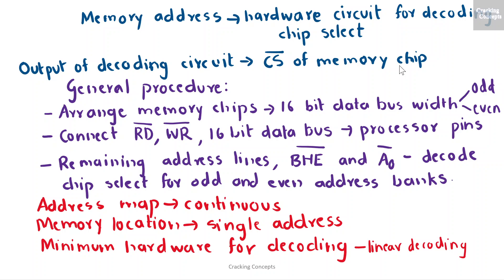Now let us see the general procedure for static memory interfacing with 8086. First, we arrange all the available memory chips to obtain a 16-bit data bus width. The upper 8-bit bank is called the odd address memory bank and the lower 8-bit bank is called the even address memory bank. Then we connect the available memory address lines of the memory chip with those of the microprocessor, and also the memory read and write pins to the corresponding processor control signals. Also connect the 16-bit data bus of the memory bank with that of the microprocessor. At last we take all the remaining address lines of the microprocessor, BHE and A0, for decoding the required chip select signal for odd and even memory banks. The CS of memory is derived from the output of the decoding circuit.